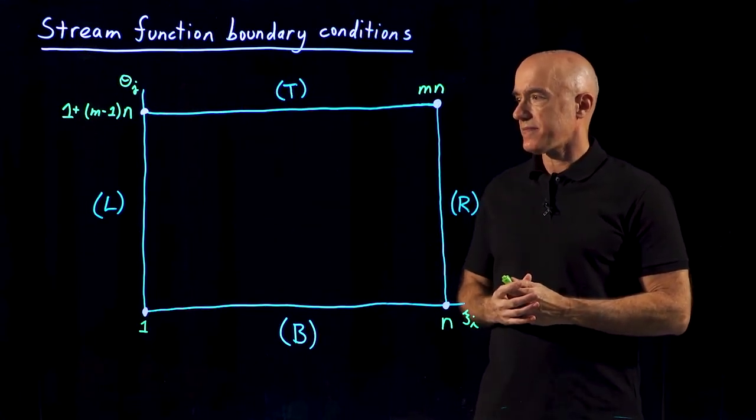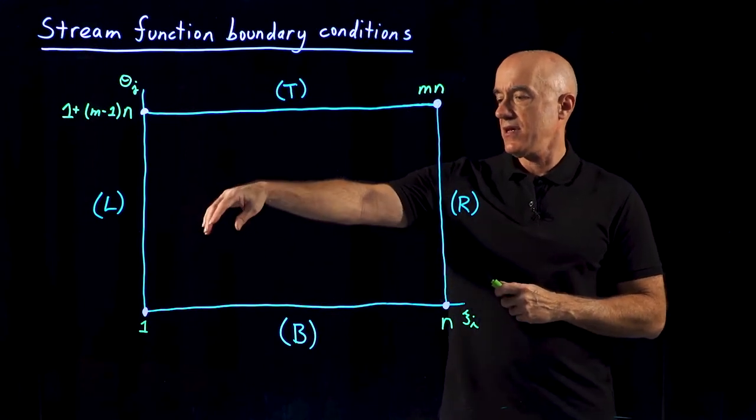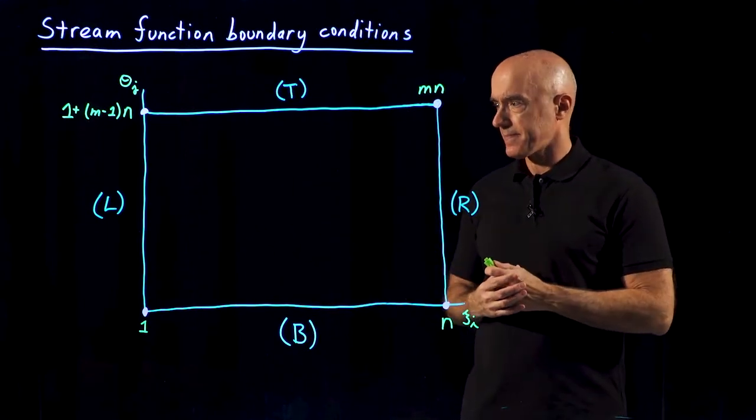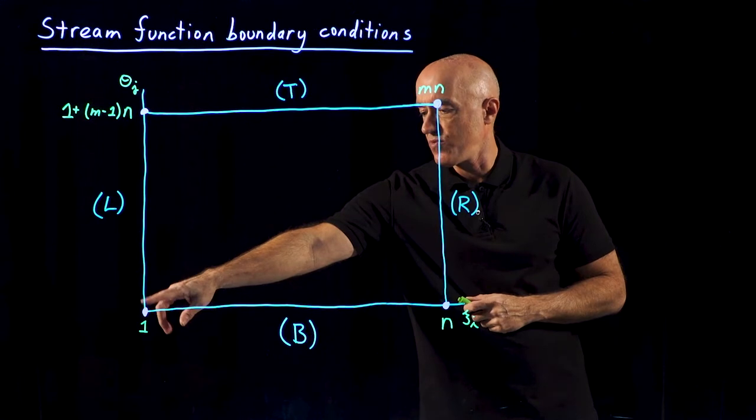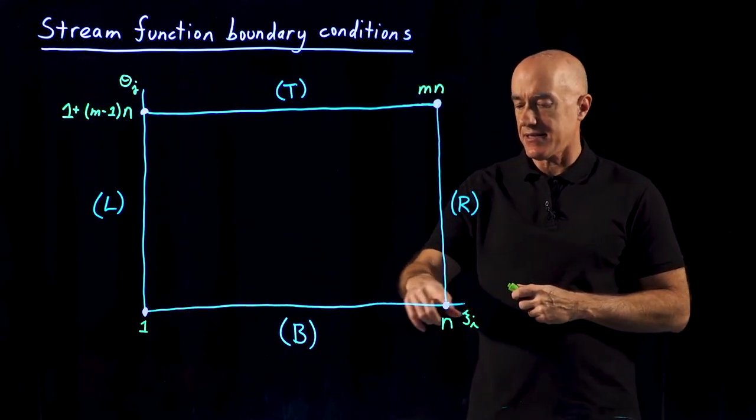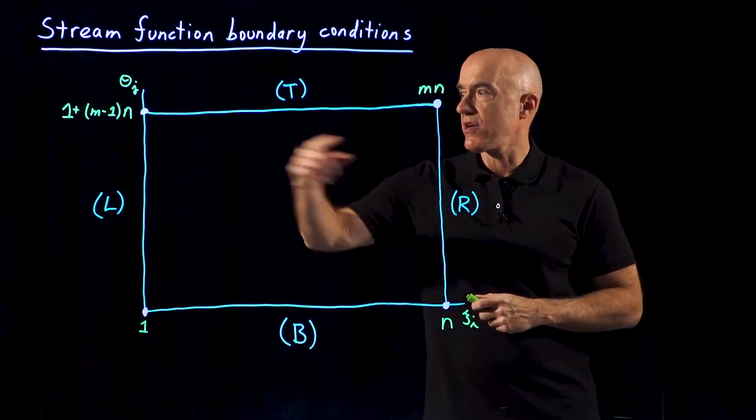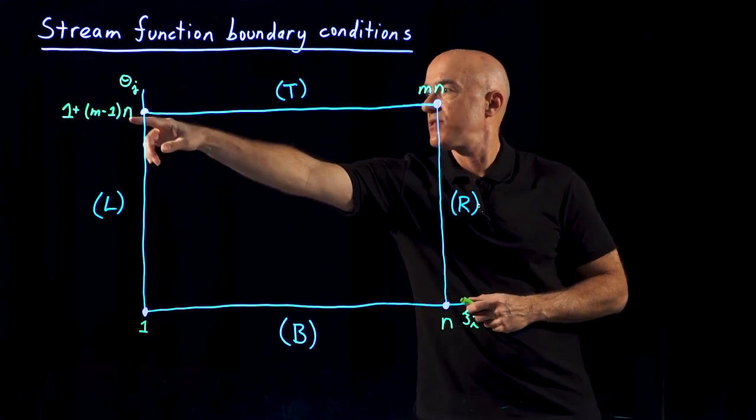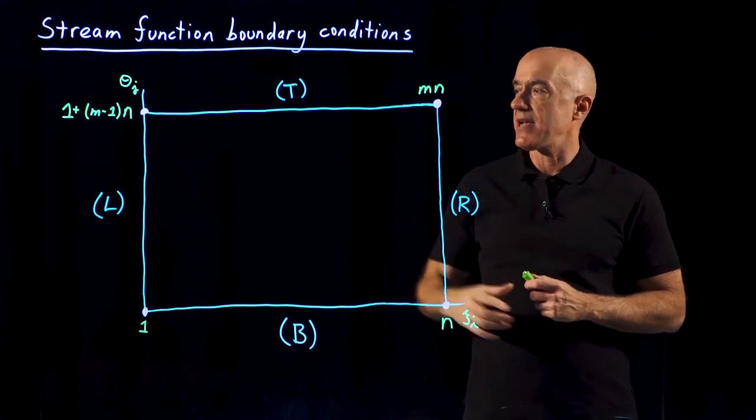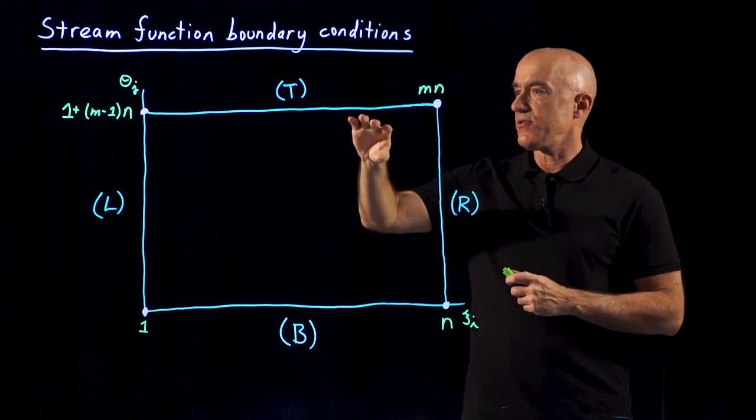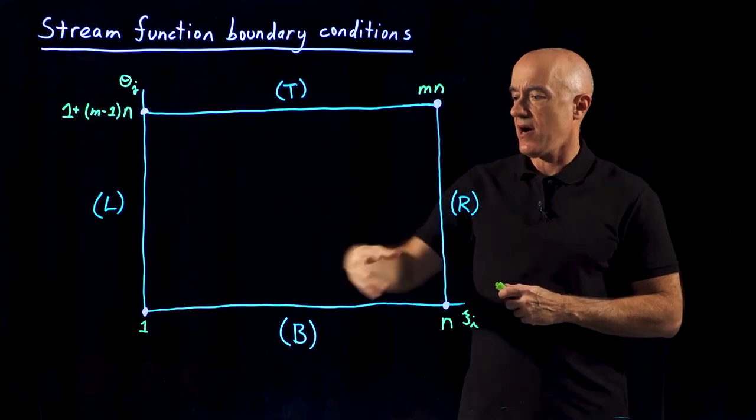So this is our domain. The boundary has four sides. I've labeled them left, right, bottom and top. We're doing natural ordering, so the first grid point is labeled 1 and then we go along the x-axis to the grid point N. Then we come back to the beginning again and keep going across until we get to the top, which is starting at 1 plus M minus 1 times N and finishing at M times N.